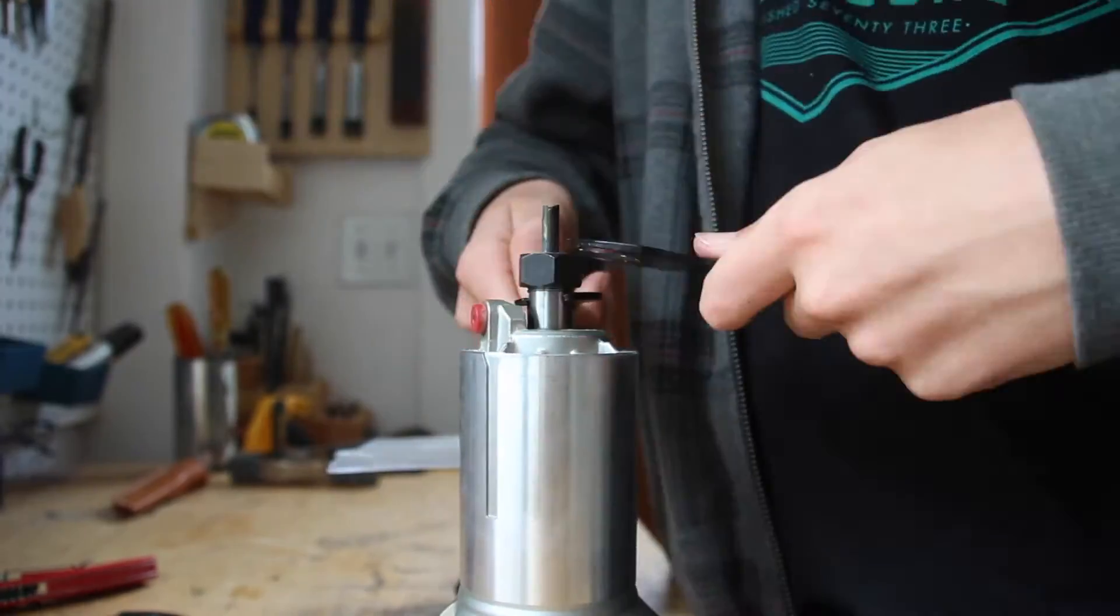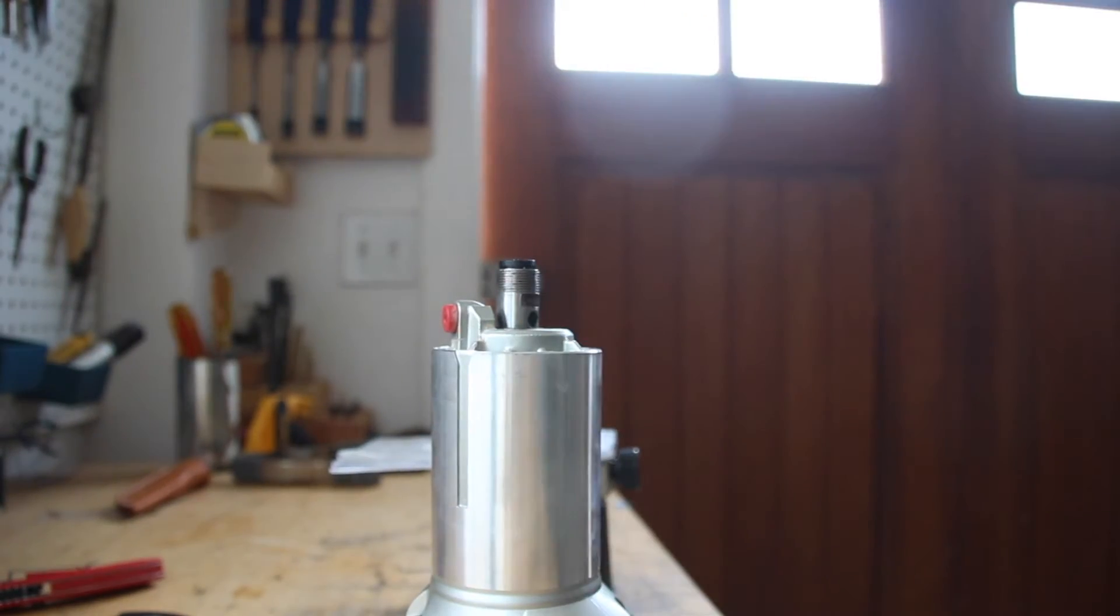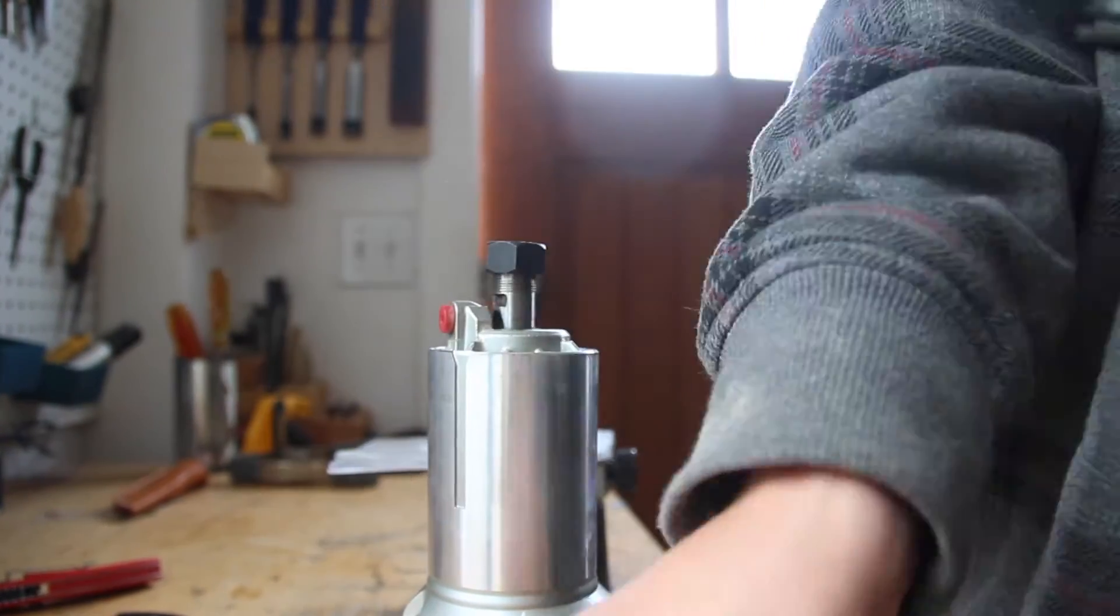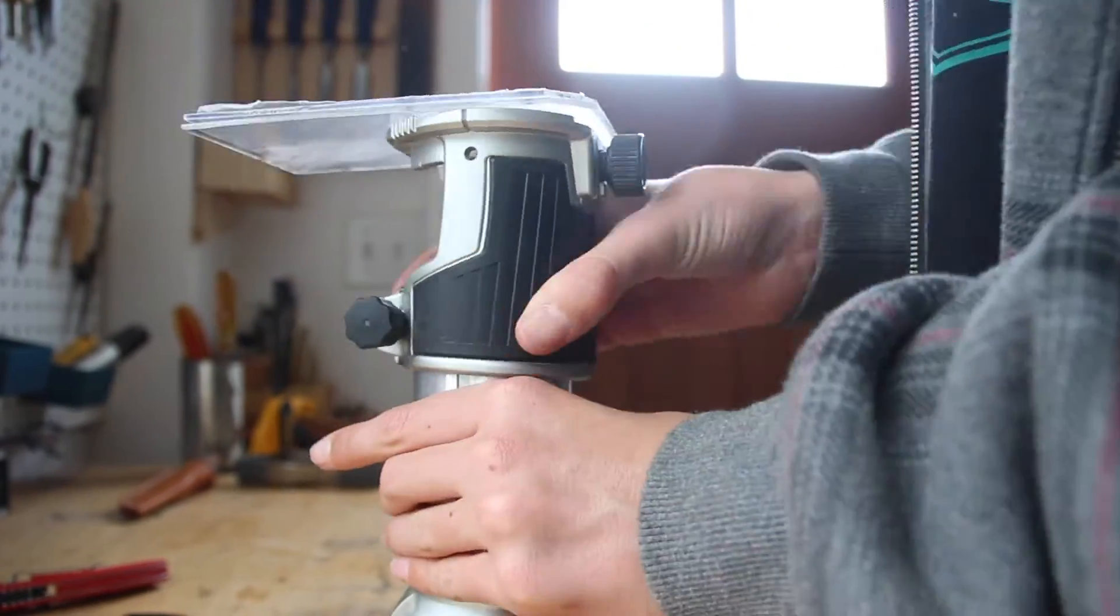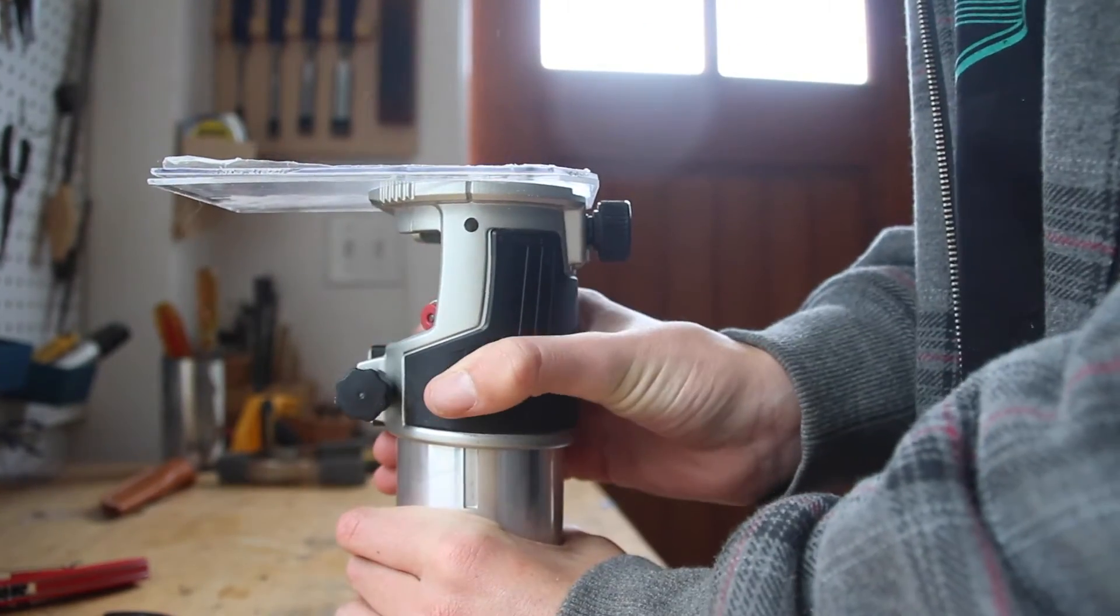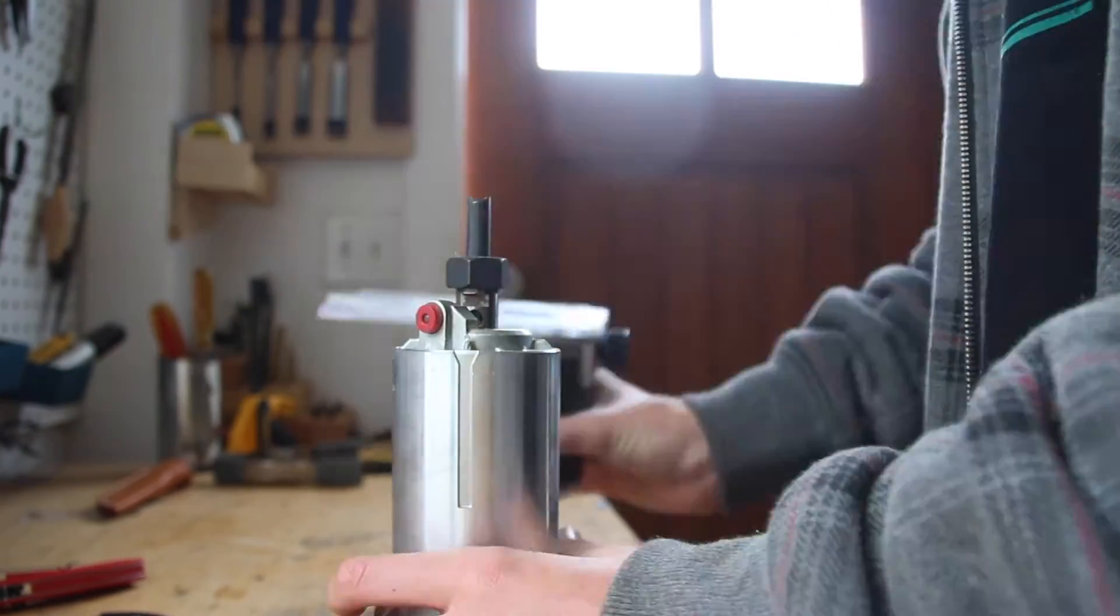And here I decided to get the hole perfectly centered. I would just put a bit in the router, turn it on, and then lower the base piece onto it. Which actually worked pretty well, although it was a tiny bit scary.